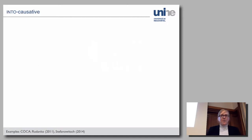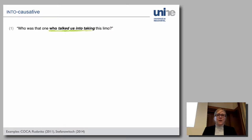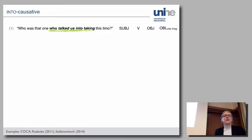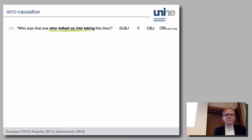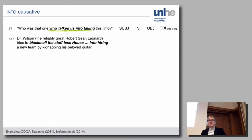What's the intercausative? One example: 'Who was that one who talked us into taking this limo?' Structurally, this consists of a subject (who), a verb (talk), an object (us), and into taking — what we call an oblique, required in this construction, which is a prepositional phrase: into plus a verb in the -ing form. A second example: Dr. Wilson tries to blackmail the staffless house into hiring a new team by kidnapping his beloved guitar. What does the construction mean? We have a causer who acts on a causee, by means of an action, such that the causee carries out an action.